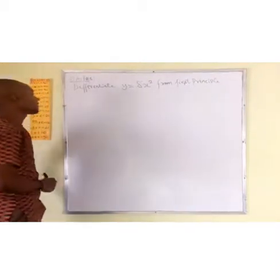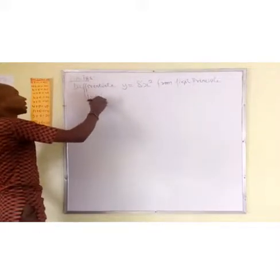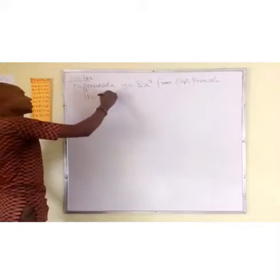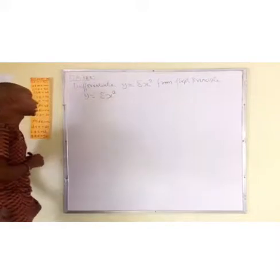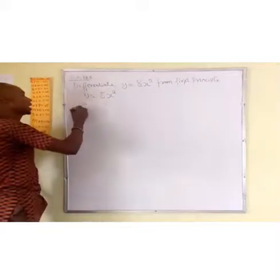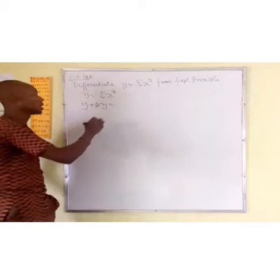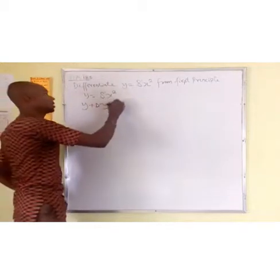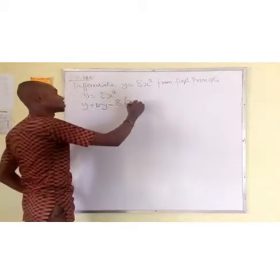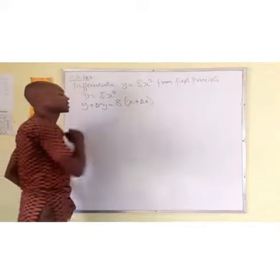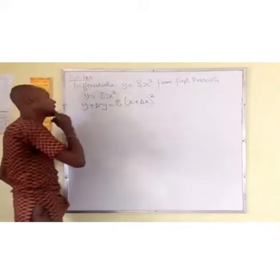Now, what we need to do? First of all, we have y plus 8x to the power 2. This is the question. Now, what we need to do? We have y plus Δy equal to 8 times (x plus Δx) to the power 2.